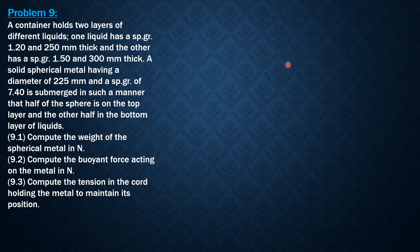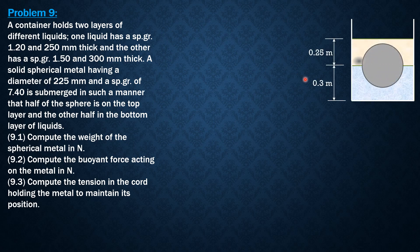The upper part of the sphere should be submerged because its radius is less than 0.25 meters, and the bottom portion as well. We have upper layer specific gravity 1.2, lower layer specific gravity 1.5. The weight, let's note that by W.